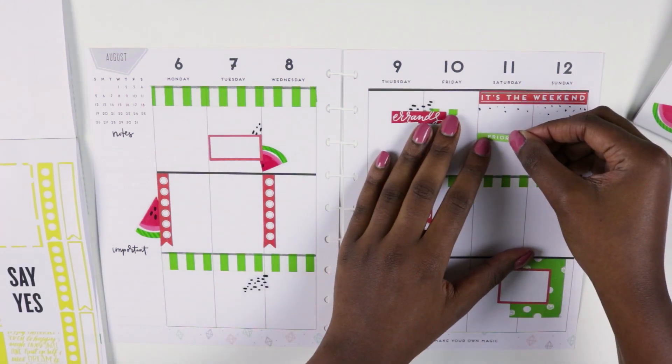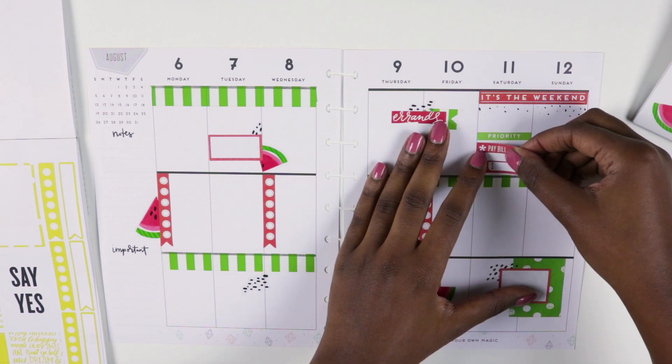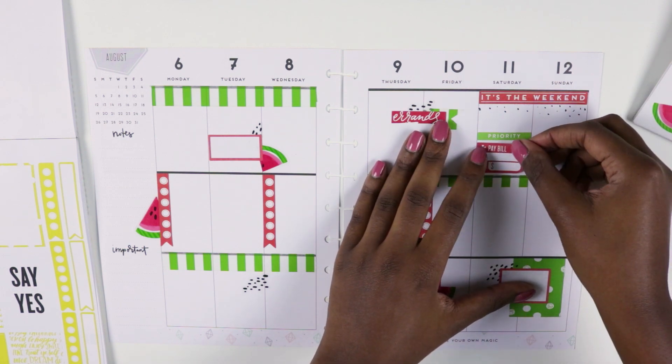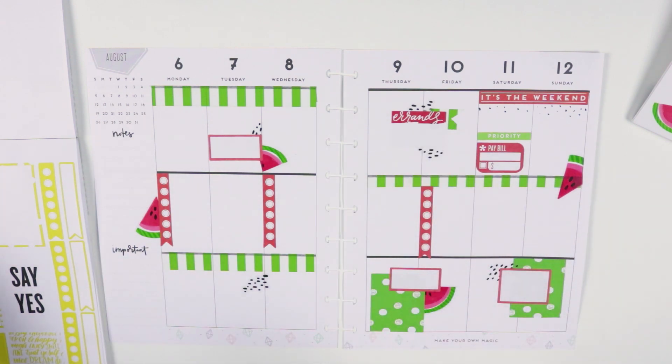I then added a priority sticker to the top of Saturday and placed a red paybell sticker, I think from the planner basics, underneath it. Being an adult is so tough, y'all. It is so hard.